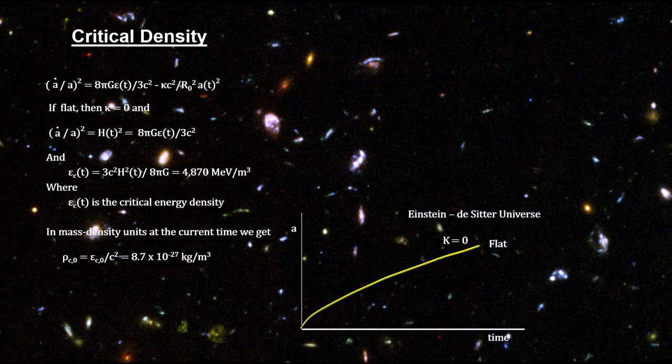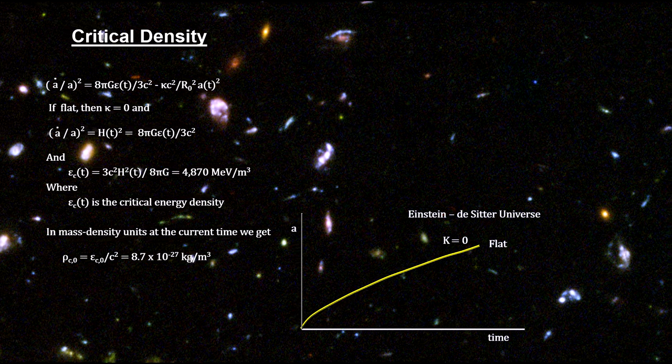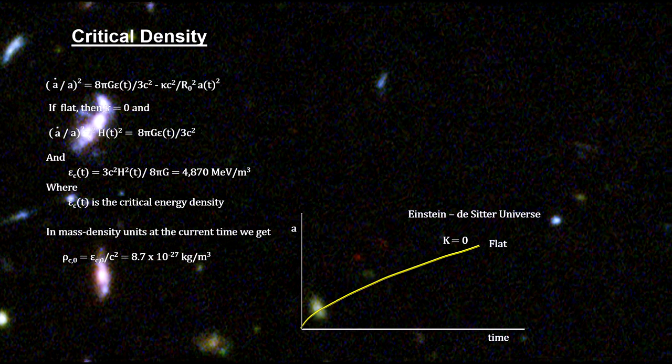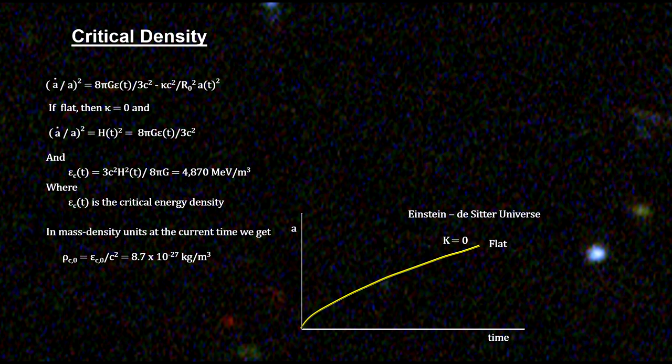The actual density of interstellar space is on average about one proton per cubic centimeter. That's a million times denser than the critical density. But much of the universe is made up of vast voids with far less than this. So five protons per cubic meter could be the number we actually have.